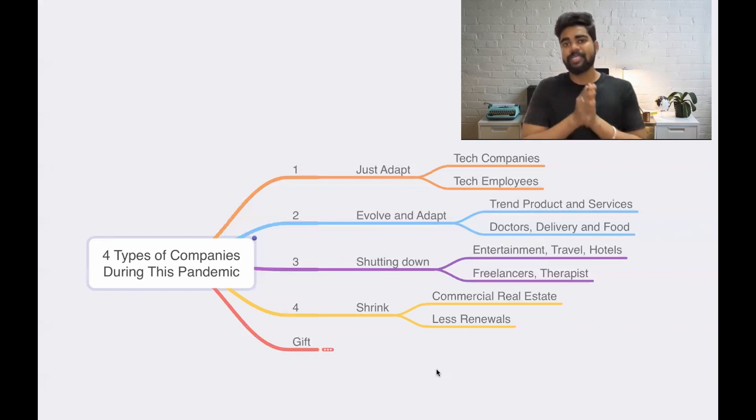If at all, you're looking to change your careers during this pandemic or later, you need to understand what are all the four types of companies that you have and what is the best choice that you can make. You can go for type one and type two where they just adapt to the situation or they just evolve and adapt to the situation. If you choose these two types of companies, then you don't face any problem during this pandemic. So that is something which I have for you today.